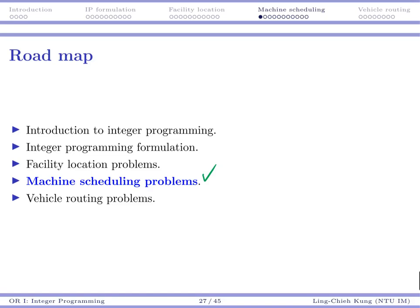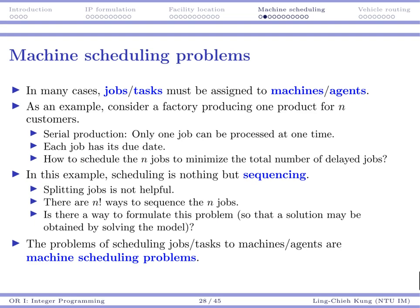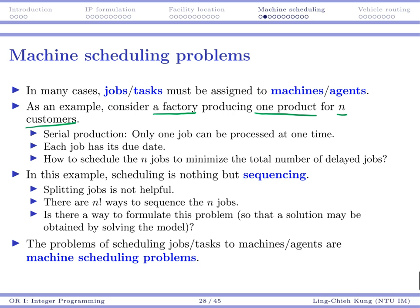Our next topic is about machine scheduling. In many cases, the decision is to assign jobs or tasks to machines or agents. As an example, suppose you have a factory producing one product for multiple customers — for example, producing desks or tables. You have multiple customers and they order from you.